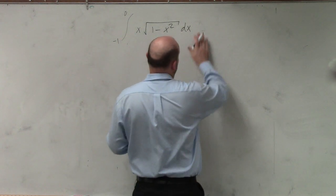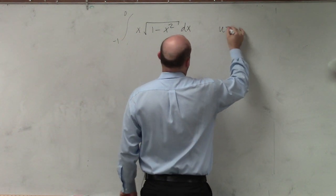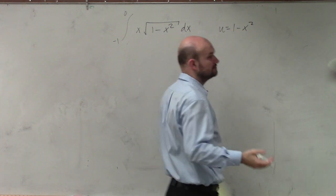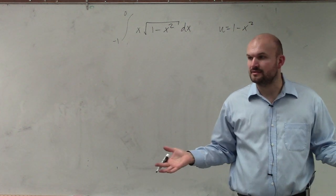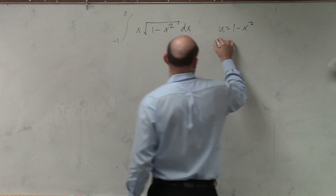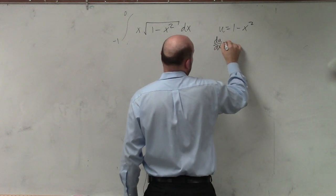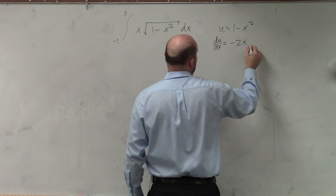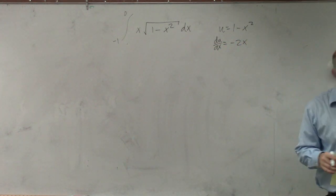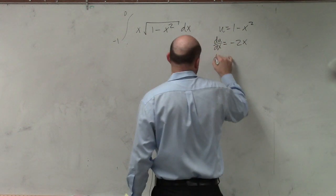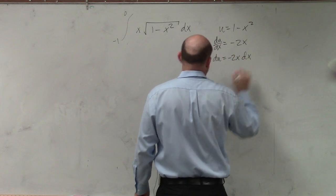So I think we can all agree that u is equal to 1 minus x squared. We can all agree on that, right? And we can all feel pretty comfortable that du/dx is equal to negative 2x, correct? And then if we want to solve for du, we could say du equals negative 2x dx.